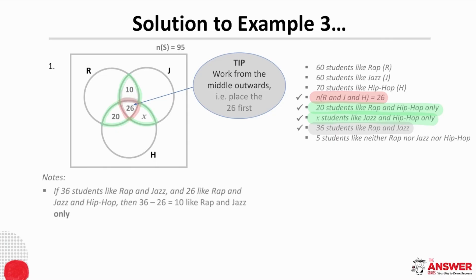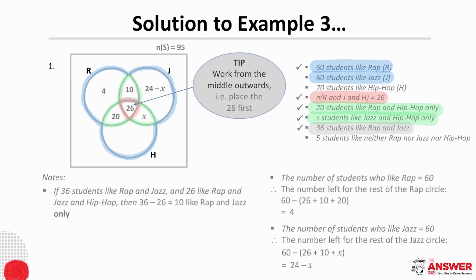We are ready now to fill in the next layer of information. Let's start with the first statement. 60 students like Rap. This means everything in here must add up to 60. The 10 and the 26 and 20 give us 56. And so that leaves 4 to go here. Next, 60 students like Jazz, which means this all has to add up to 60. And so 60 minus each of these leaves 24 minus X for here. And 70 students like Hip Hop. And so what is left for the rest of the Hip Hop circle is 70 minus each of these, which is 24 minus X.